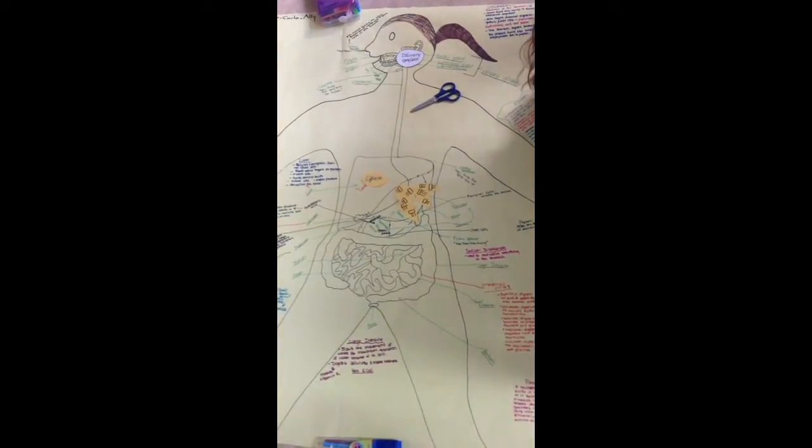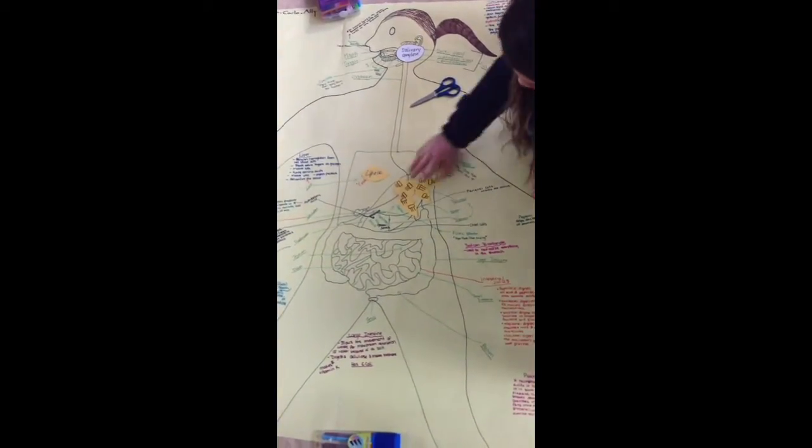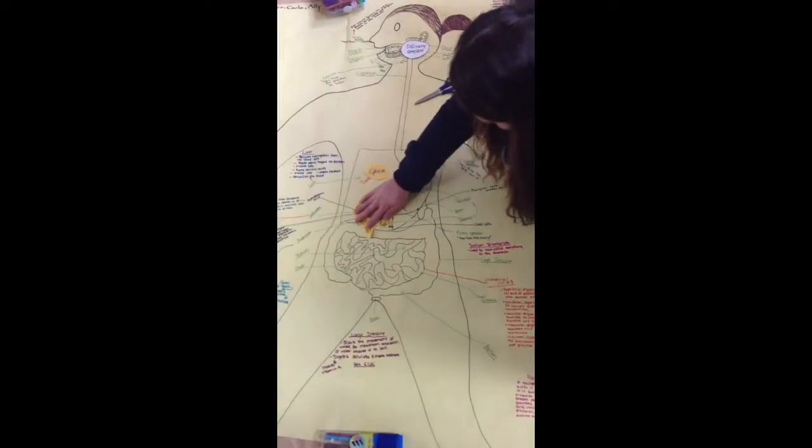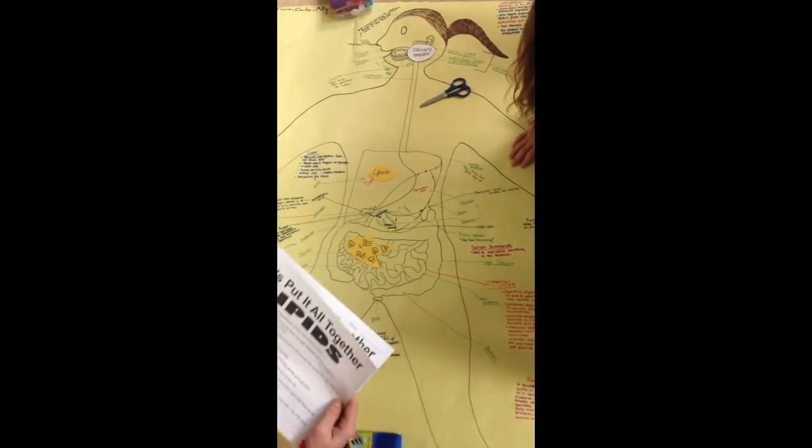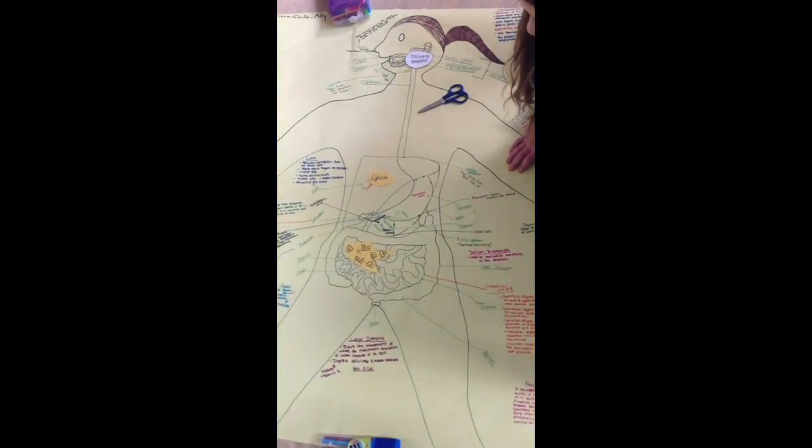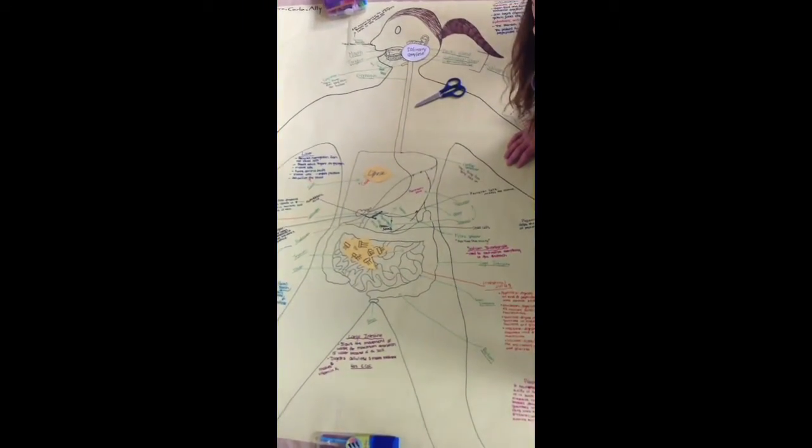Fatty acids and glycerol move into the lacteals of the villi. The lacteals are connected to the lymphatic system and take the fatty acids and glycerol to the subclavian vein in the shoulder.